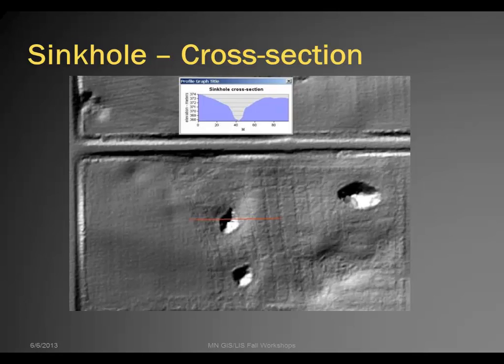Another way to examine that feature would be using a profile graph. Drawing a line on screen using the 3D tool within ArcGIS, we can see the change in elevation from the flat area at 374 meters down to 368 meters at the center of the sinkhole, then back up to the low side off to the east at about 372 meters.